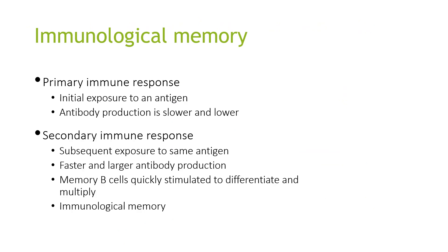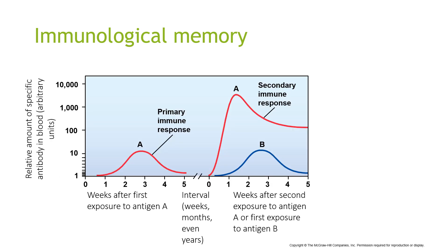Immunological memory involves a primary immune response and a secondary immune response. In the primary response, there is initial exposure to an antigen and antibody production is slower and lower. In the secondary response, there is subsequent exposure to the same antigen, resulting in faster and larger antibody production, as memory cells are quickly stimulated to differentiate and multiply. As shown on the graph, the secondary immune response rises much faster due to this recall effect.